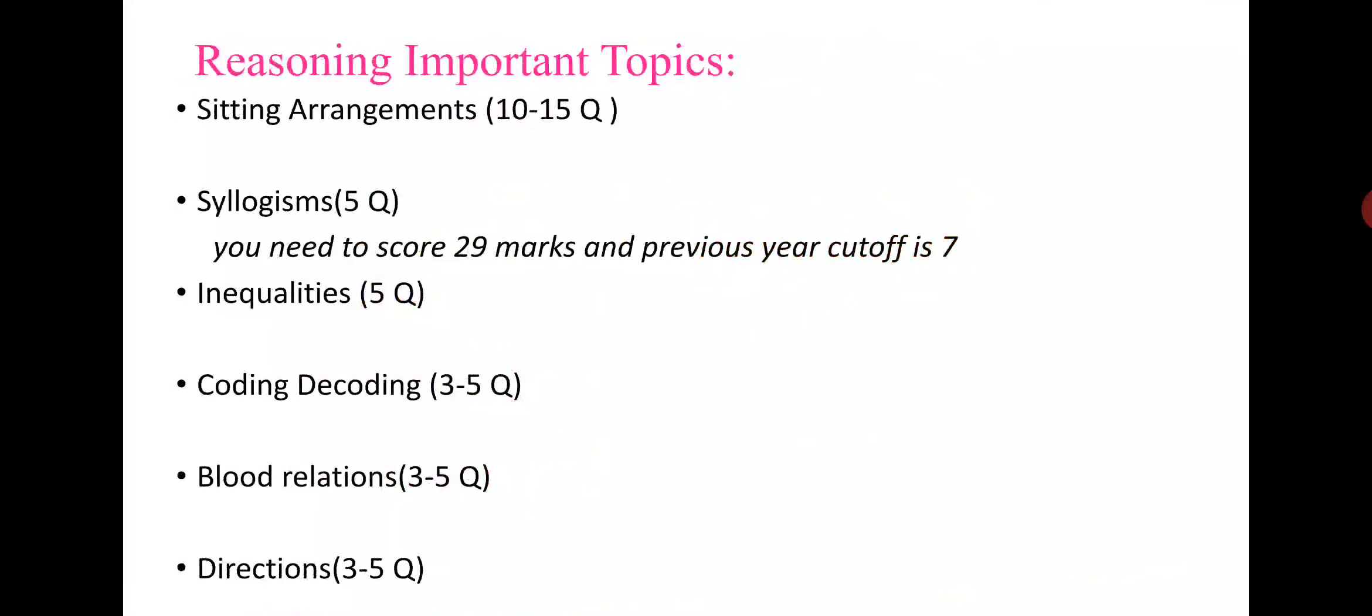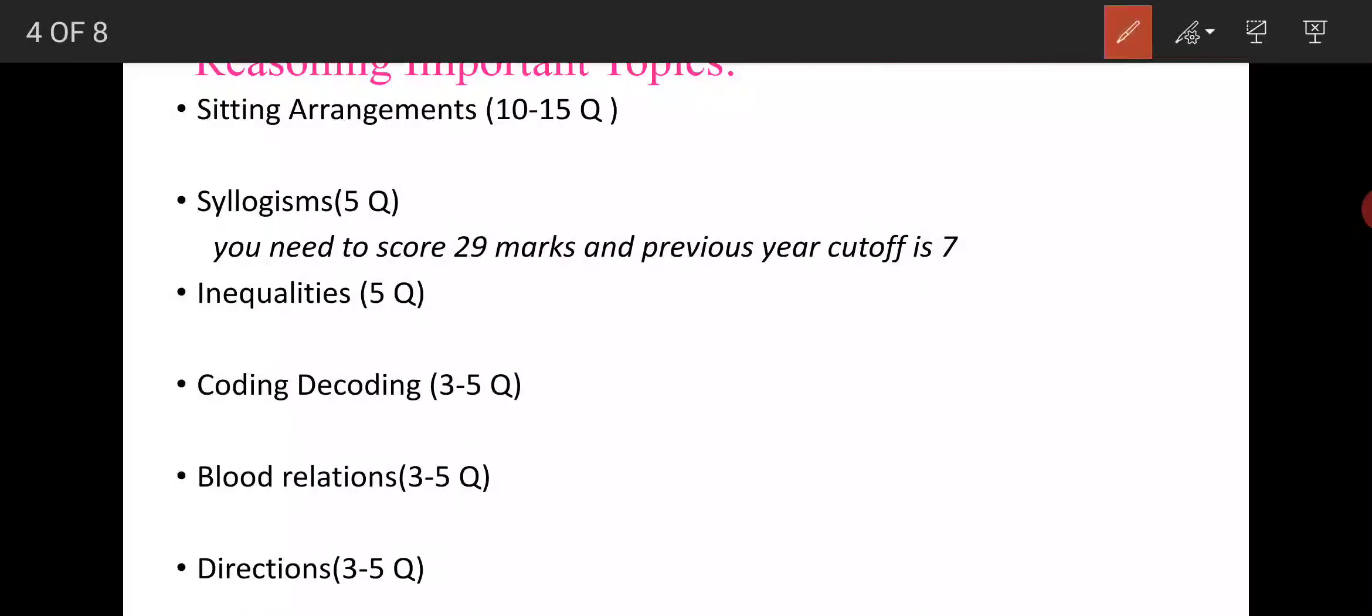Now for Reasoning important topics: Seating Arrangement also has 10 to 15 questions, Syllogism 5 questions, Inequality 5 questions, Coding-Decoding 3 to 5 questions, Blood Relation 3 to 5 questions, Direction also 3 to 5 questions. You need to score 29 marks and previous year cutoff is 7.